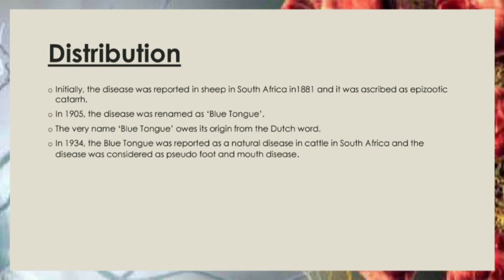Initially, the disease was reported in sheep in South Africa in 1881 and was described as epizootic catarrh. In 1905, the disease was renamed as blue tongue. The very name blue tongue has its origin from the Dutch word. In 1934, blue tongue was reported as a natural disease in cattle in South Africa and the disease was considered as pseudo-foot and mouth disease.